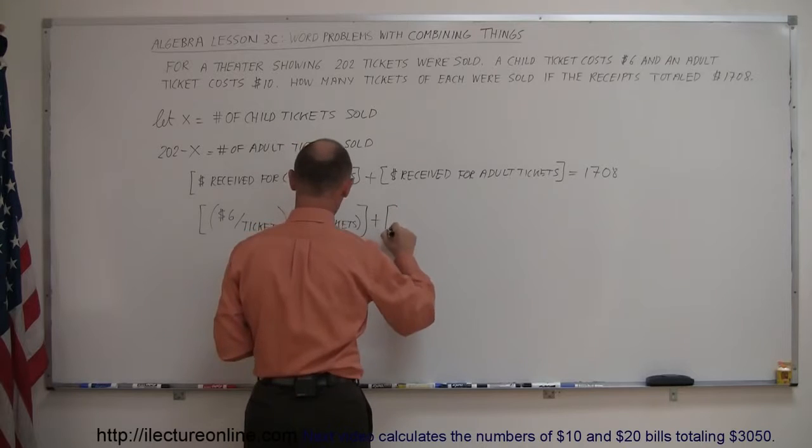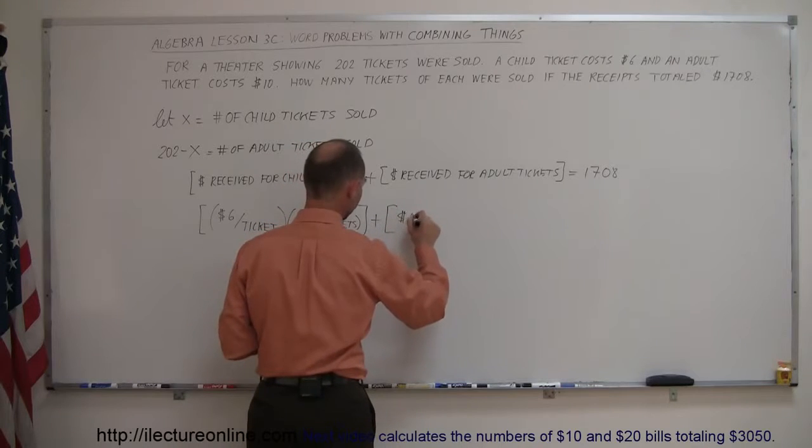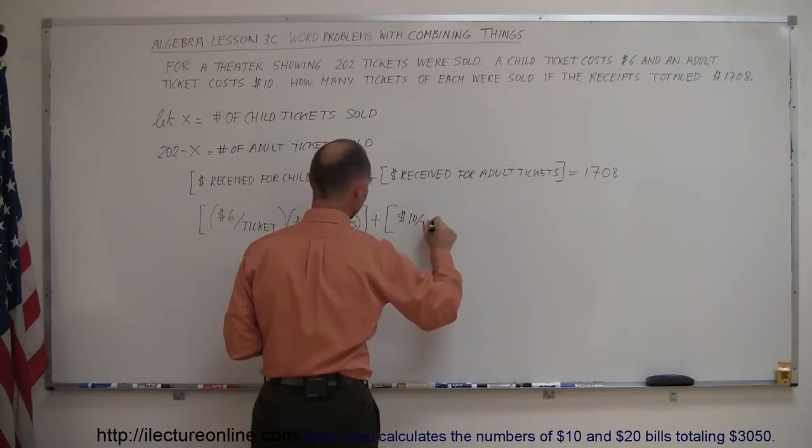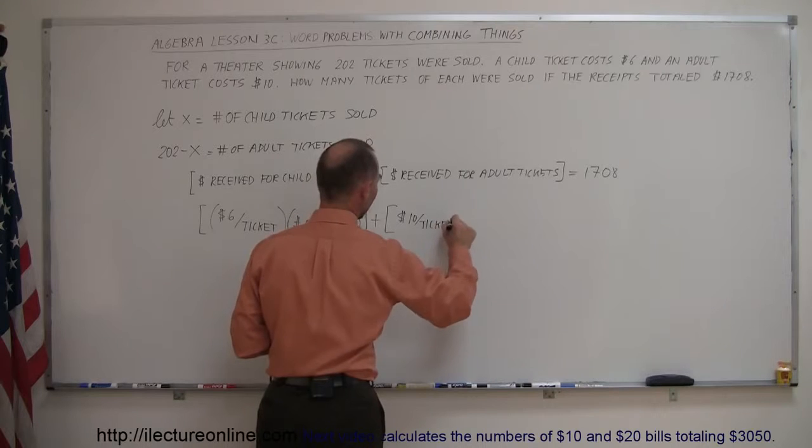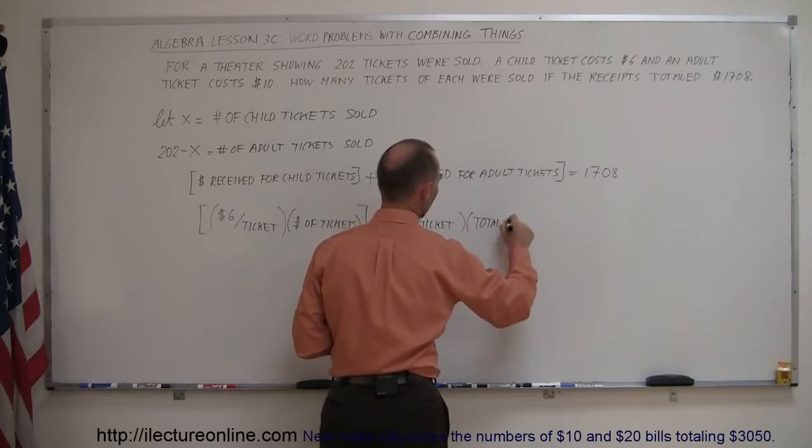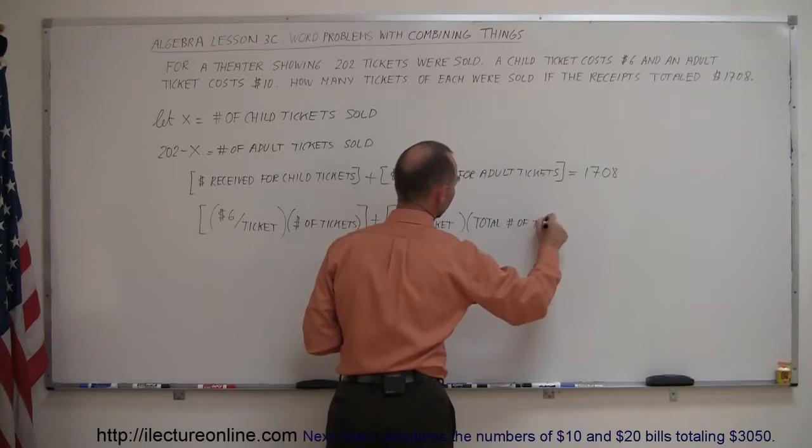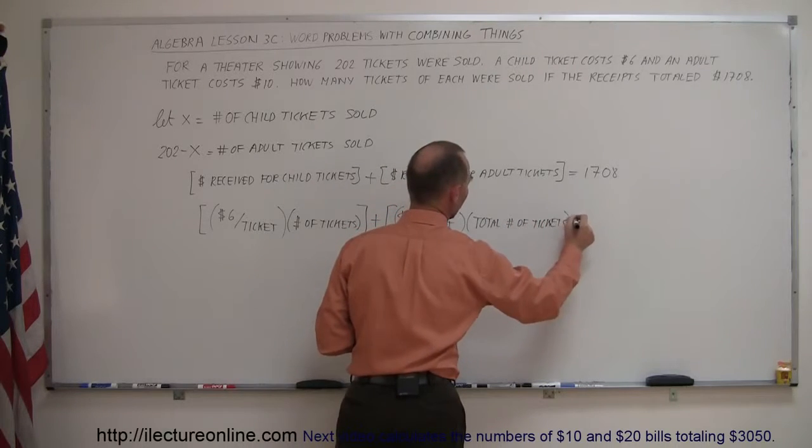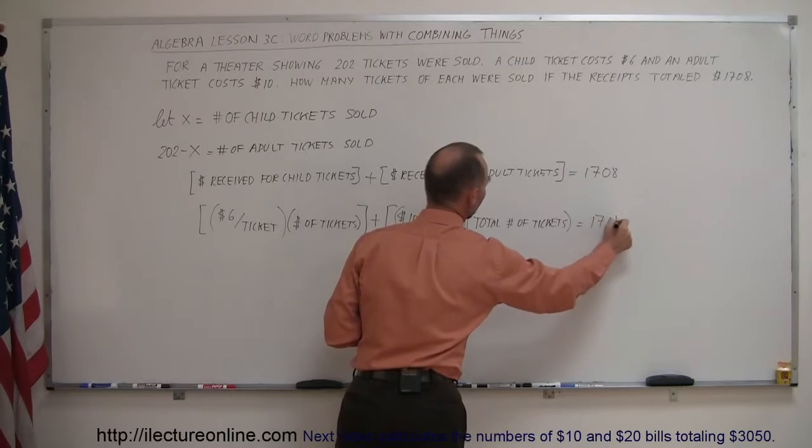You do the same for the adult tickets. There we have the cost of $10 per ticket, and then you multiply that times the total number of tickets. For the adults, of course, and that should add up to $708.